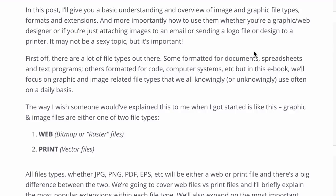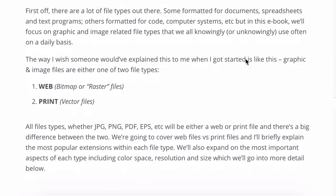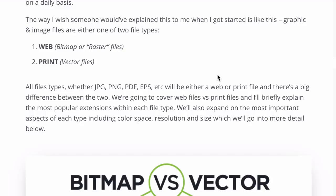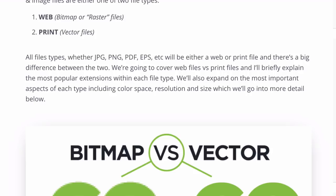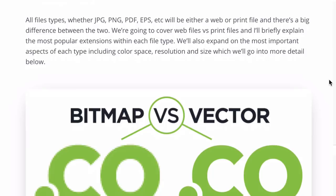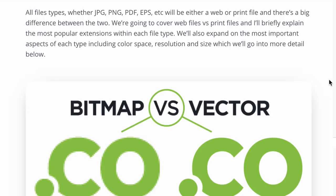Graphic and image files are going to be either one of two file types. They're either going to be web files — the technical term is bitmap or raster files — or they're going to be print files, which are called vector files. So if you've ever had to send a logo to a printer and they ask for the vector file, that's what they're talking about. Every image file type, whether it's a JPEG, PNG, PDF, EPS, or whatever, falls into one of these two categories.